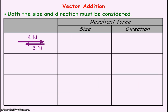If we were to add a 4N force that acts to the right with a 3N force that acts to the left, the resultant force — which means the overall force or the net force — would be 1N to the right. However, if we had a 4N force and a 3N force both acting to the right, the resultant force will be 7N to the right.